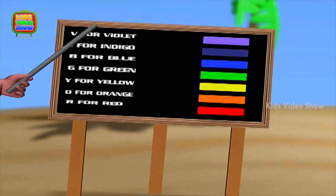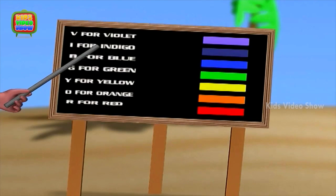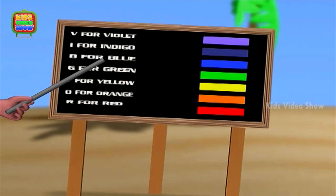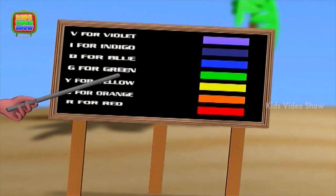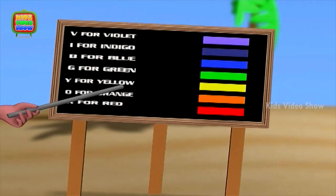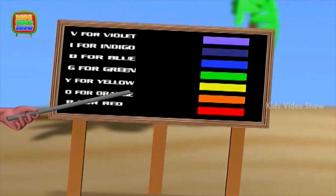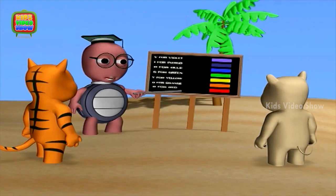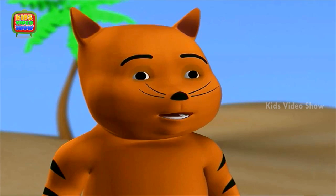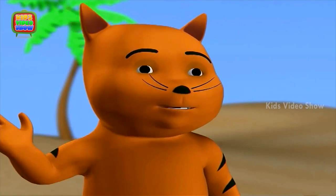V is for violet, I for indigo, B for blue, G for green, Y for yellow, O for orange, and R for red. You mean rainbow colors.